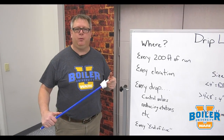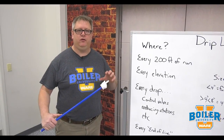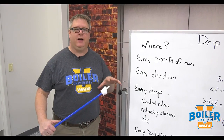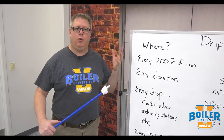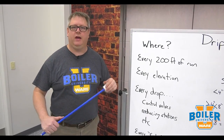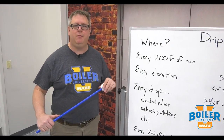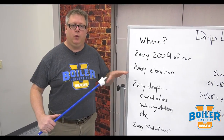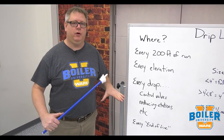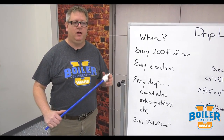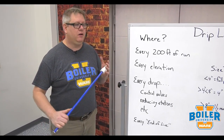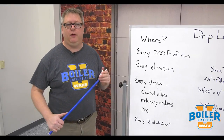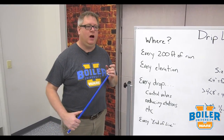On last week's boiler tip we looked at drip legs and where we're likely to find them in a boiler room and a few examples in the lab. This week we're going to look at some of the specifics of where we want to put drip legs, because we can kind of go through this checklist and make sure we've got them where we need them.